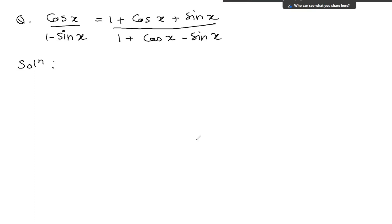Today's question is: cos x upon 1 minus sin x is equal to 1 plus cos x plus sin x upon 1 plus cos x minus sin x. We have to prove this — LHS is equal to RHS.